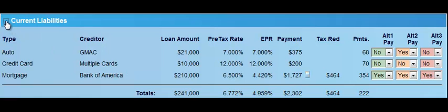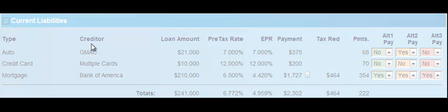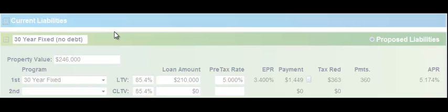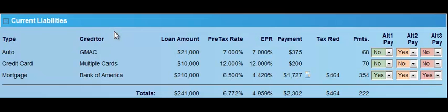You'll notice there is a little negative sign here. If I contract or collapse that particular window, it moves the windows up. I click the plus sign to expand this window. All of the windows are WYSIWYG, which means what you see is what you get. If I collapse it, the current liabilities won't show up. If I expand it, they will.